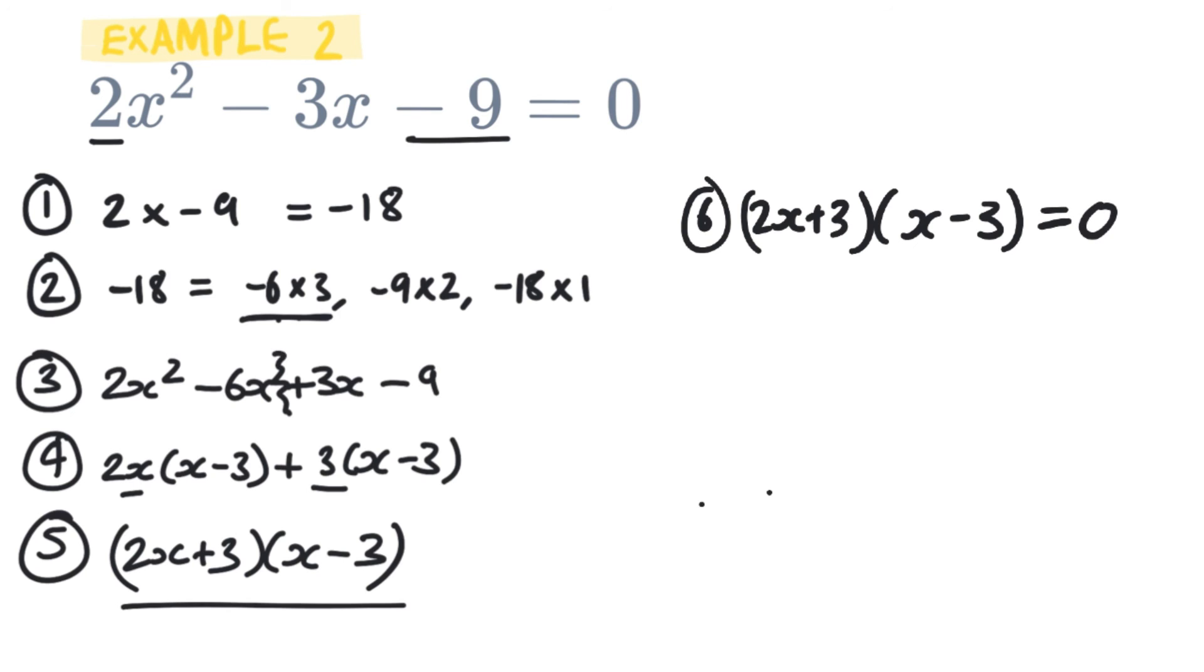So that means that one of these brackets must always be equal to 0. So that means that either 2x + 3 = 0 or x - 3 = 0. And if we solve these out we can have 2x = -3. And in this situation this is where it might get slightly complicated but it's really not too difficult at all.